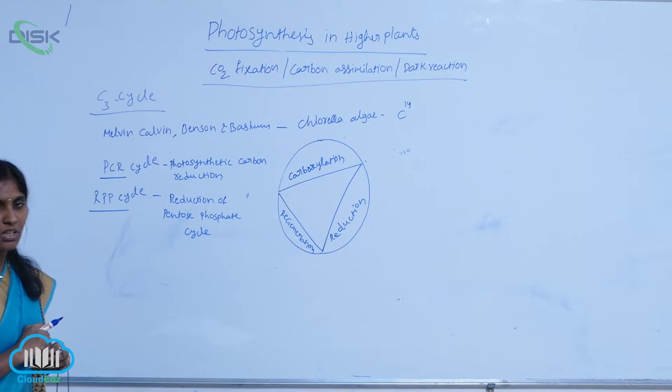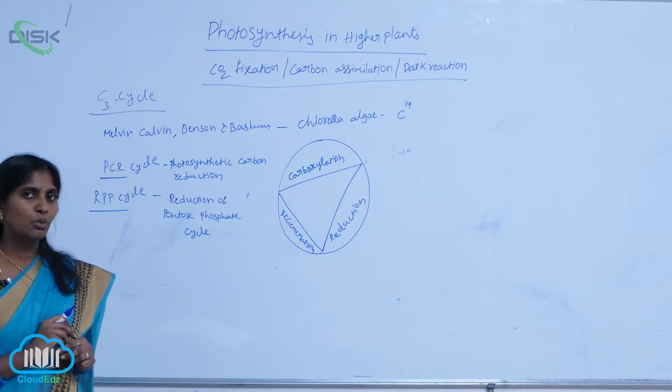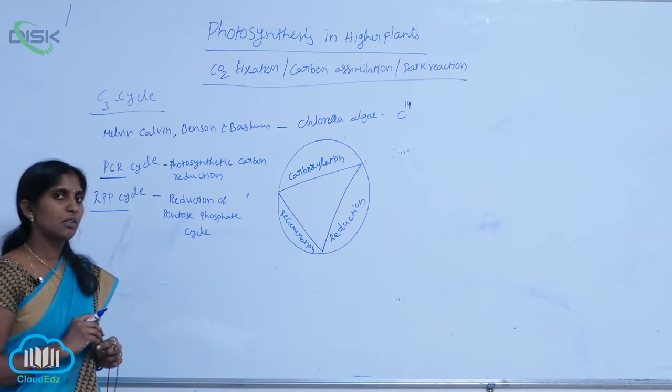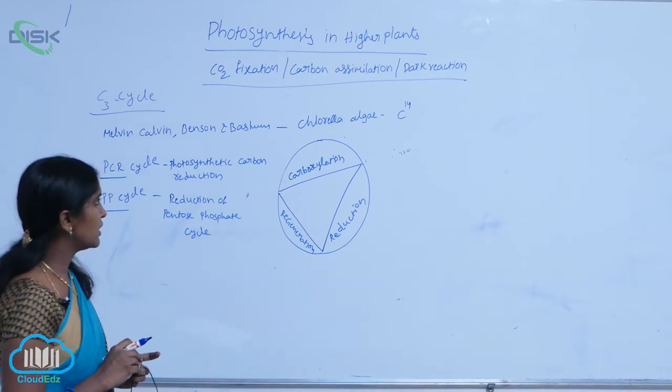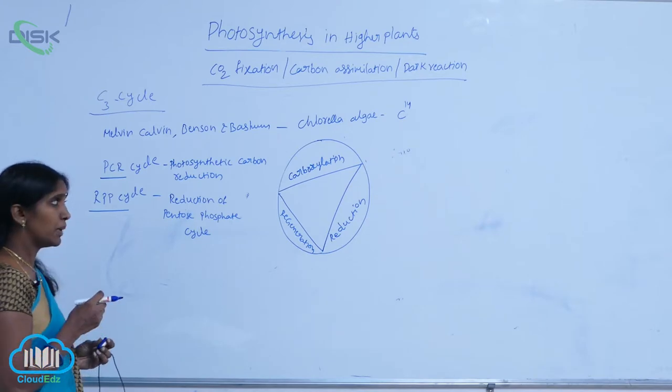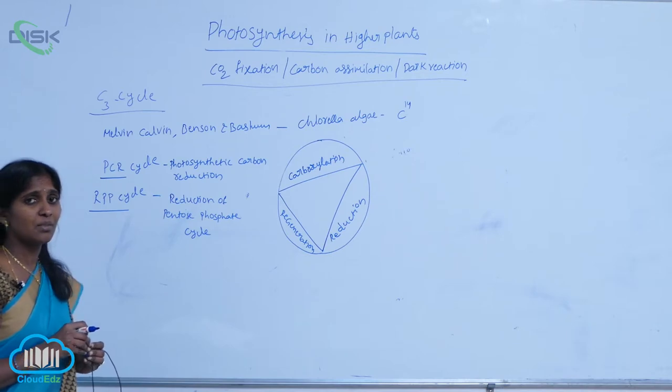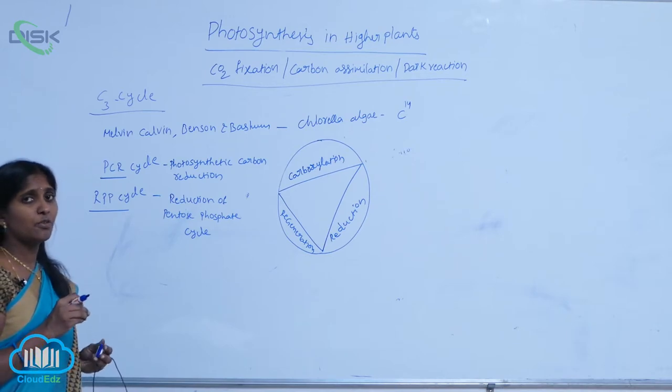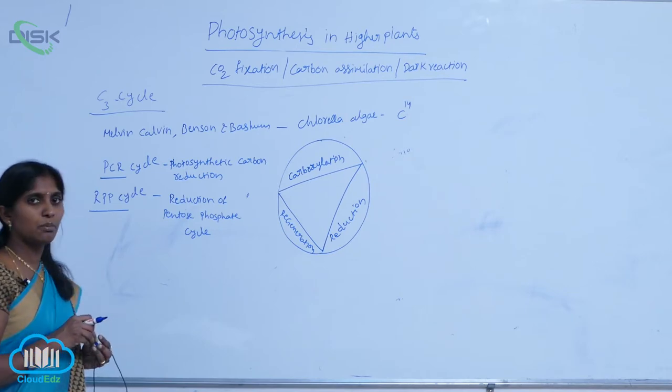Carboxylation means the first acceptor of carbon dioxide is RUBP (ribulose 1,5-bisphosphate). By accepting CO2 during the carboxylation reaction, the first stable compound produced is PGA.